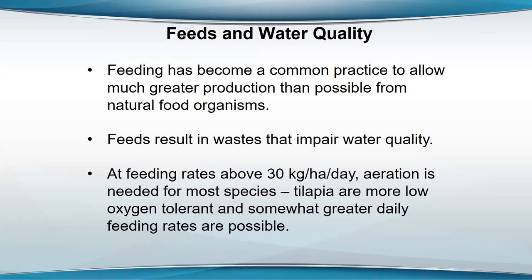If you get an FCR of 1.5, that's fine from an economic standpoint, but from a water quality standpoint there's so much more waste going to the water. Much more of the feed goes into the water as waste than goes into the fish to produce biomass. And if you increase those feeding rates very much, the water quality of the pond deteriorates to the point that the fish are suffering from oxygen depletion and they're more susceptible to disease and they even die.